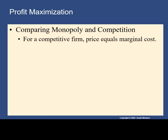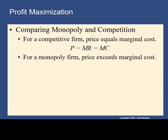As we said in class, if you compare this to the outcome for the competitive firm, the marginal revenue is the price being charged in the market. Price equals marginal cost equals marginal revenue is the competitive firm's outcome. In monopoly, the price is always going to be greater than the marginal revenue and the marginal cost.